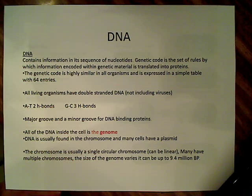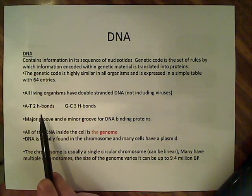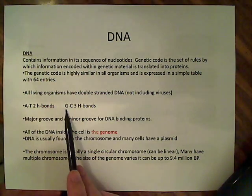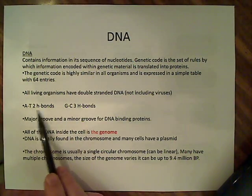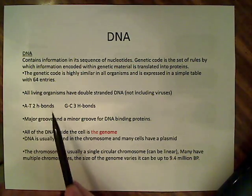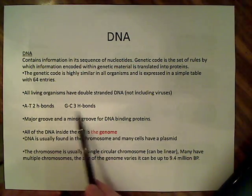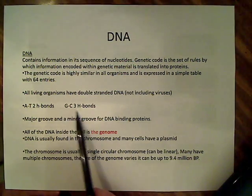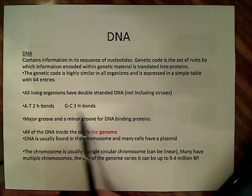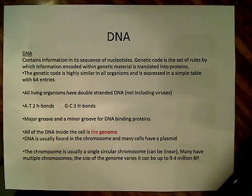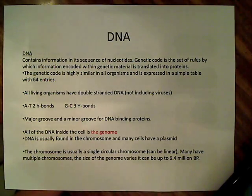We have four bases: adenine, thymine, guanine, and cytosine. There are two hydrogen bonds connecting A and T, and three hydrogen bonds connecting G and C. The more GC content you have in your DNA, the harder it is to denature, because three hydrogen bonds are stronger than two hydrogen bonds, so that makes sense.